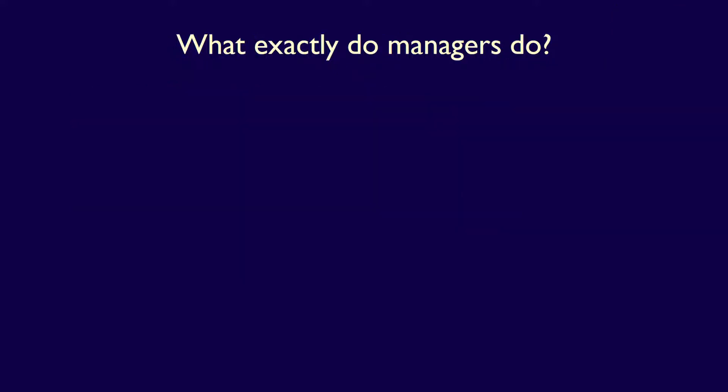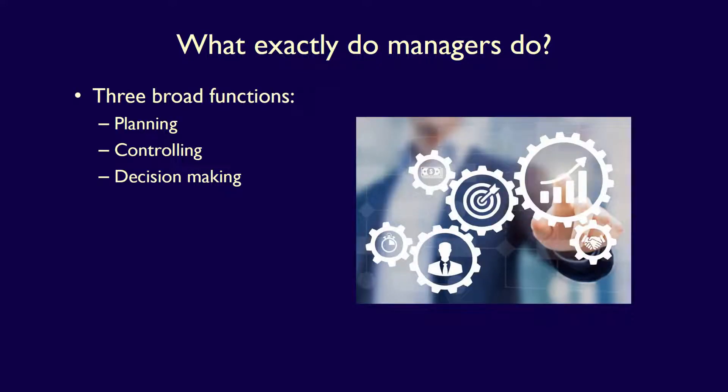But what exactly do managers do for an organization? We can divide what management does into three broad functions: planning, controlling, and decision-making. Although they seem pretty self-explanatory, let's explore each one individually.